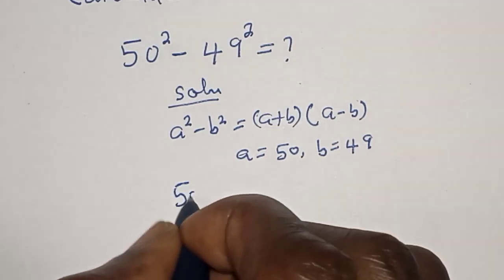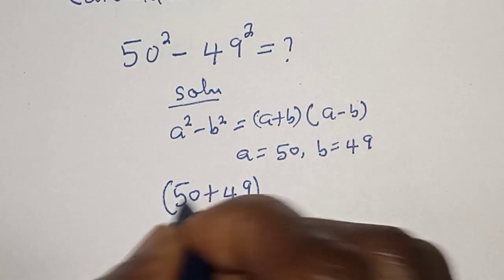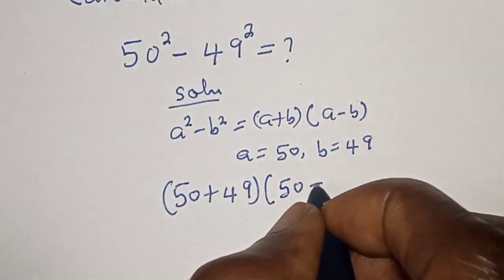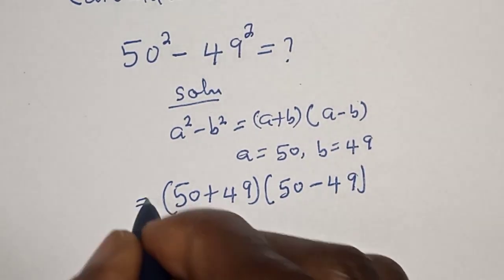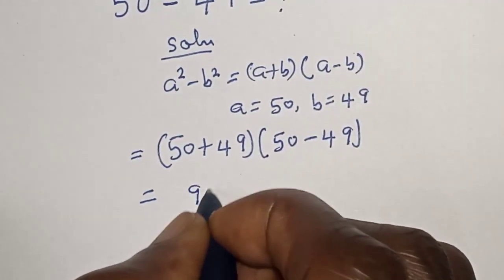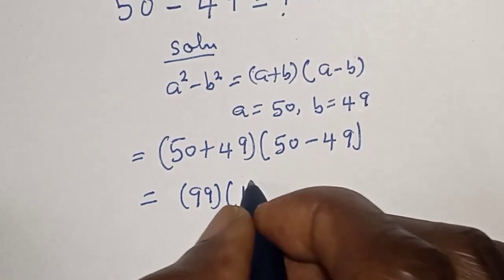We have 50 plus 49 multiply by 50 minus 49. This is equal to 50 plus 49, that is 99, bracket 50 minus 49 is 1.